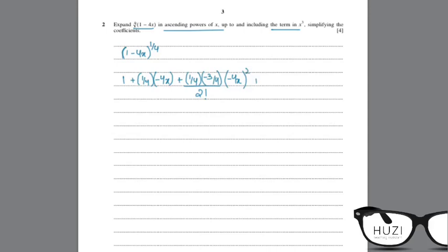And the last term, n, n minus 1, n minus 2 upon 3 factorial, nb cubed.